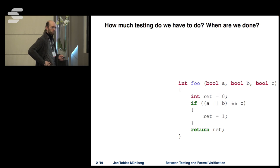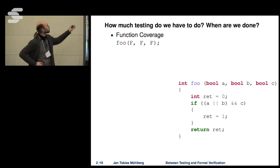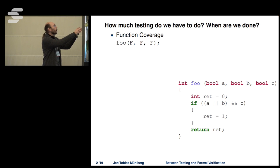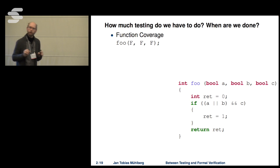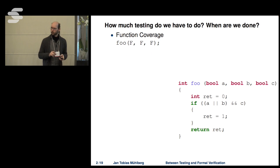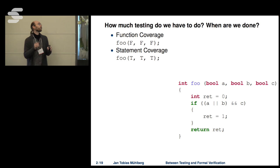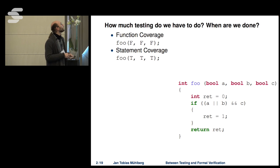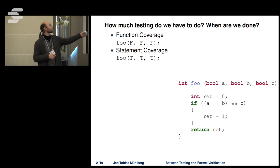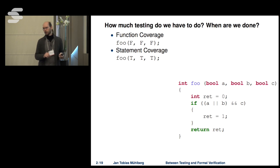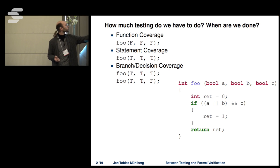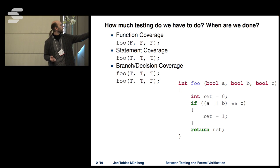One approach is branch coverage. Looking at Wikipedia's coverage criteria, the first is function coverage — you invoke every function exactly once. Next is statement coverage: you try to execute every single statement at least once. In this case, selecting true for a, b, and c would execute every single statement including the return in one single test case.